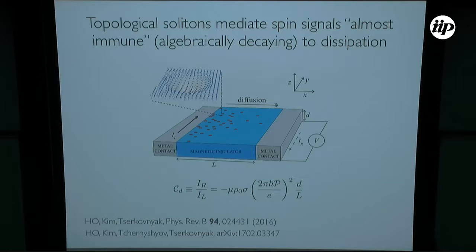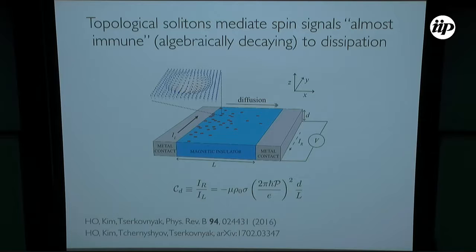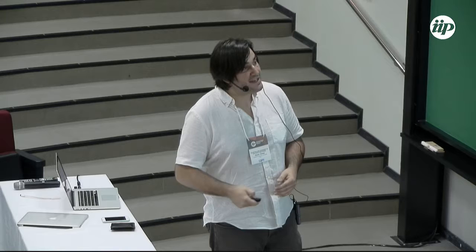In this recent work, we propose to use one example of these solitons—particular skyrmion textures in a chiral magnet—as carriers of spin signals that can be transmitted over long distances, essentially thanks to the topological protection of the skyrmion charge, which is a topological invariant.